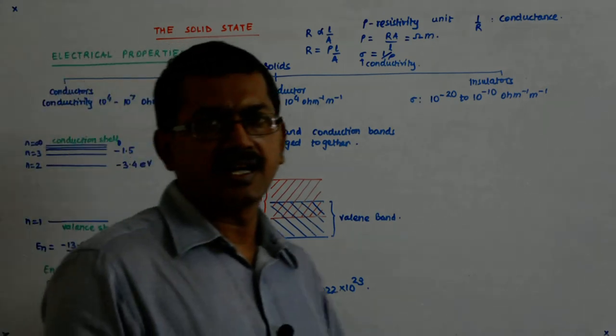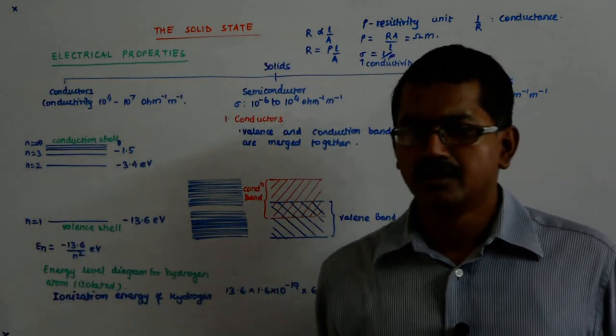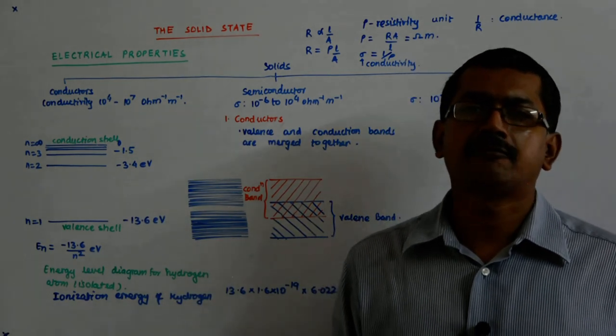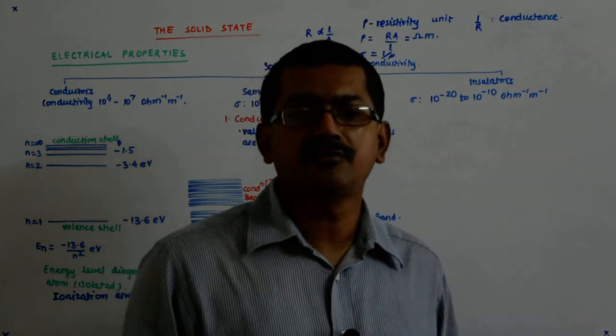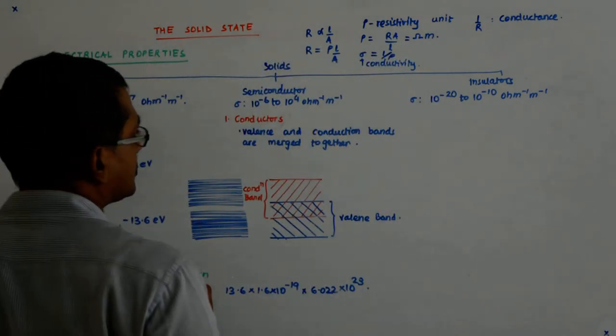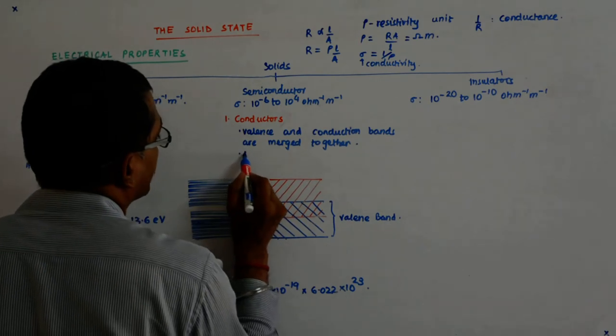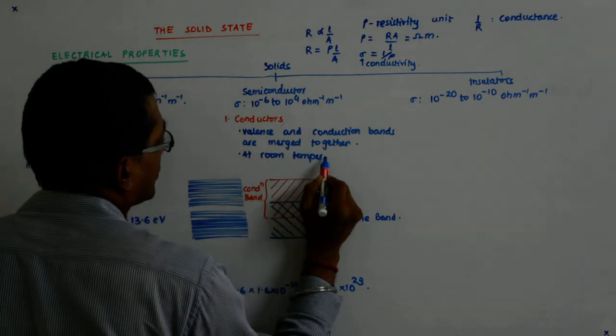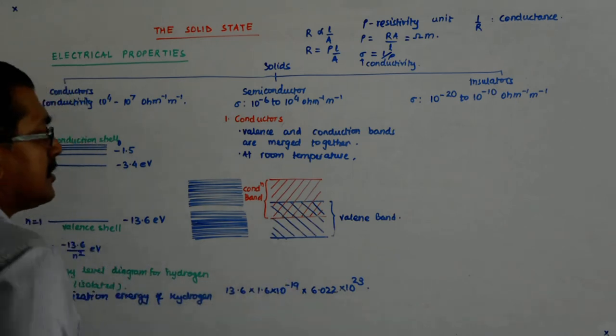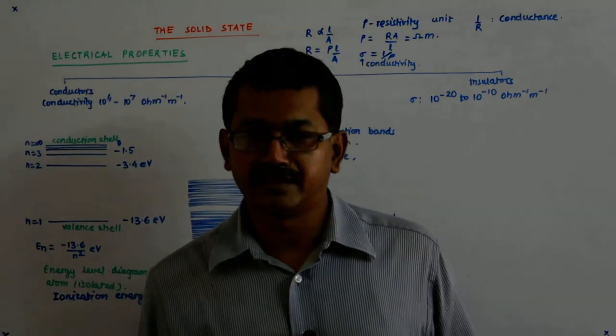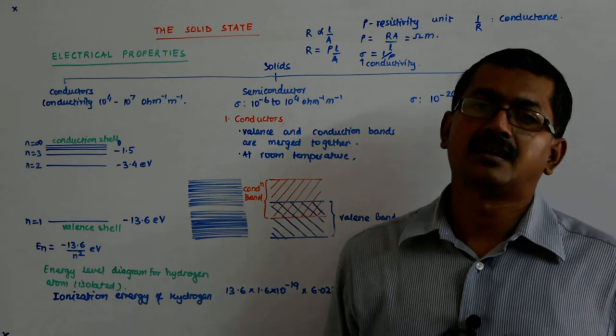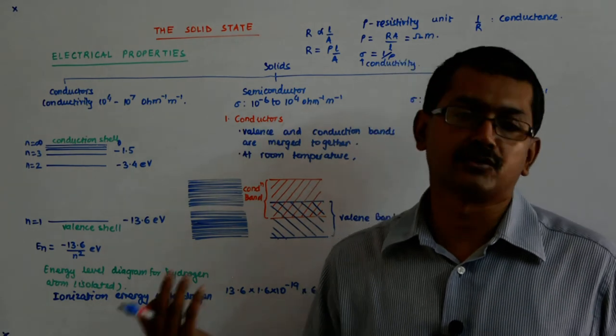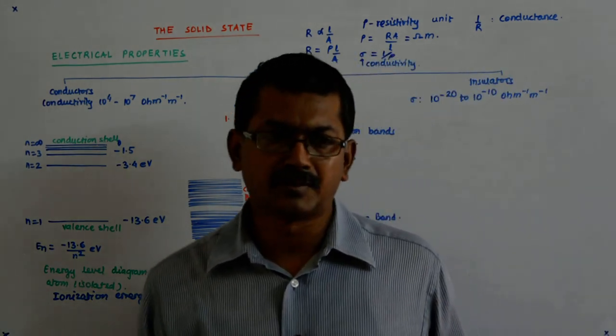At room temperature, there are so many electrons available for conduction that are free to move under the influence of electric field. At room temperature, that's hardly any in the valence band that does not get kicked into the conduction band - very small amounts.